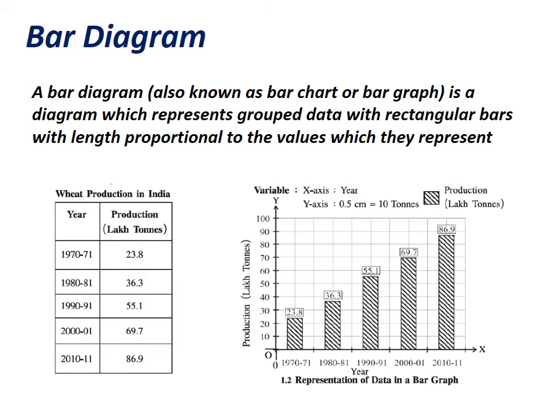In the bar diagram, 1970–71 production of 23.8 lakh tons, 1980–81 production of 36.3, and 1990–91 production of 55.1 are all shown as rectangular bars. If this data were written in text form, it would be very difficult and boring to read. But in a bar diagram, it takes seconds to understand and is easily comprehensible. That is why bars, diagrams, and charts are created — to make data understanding easier and more accurate.